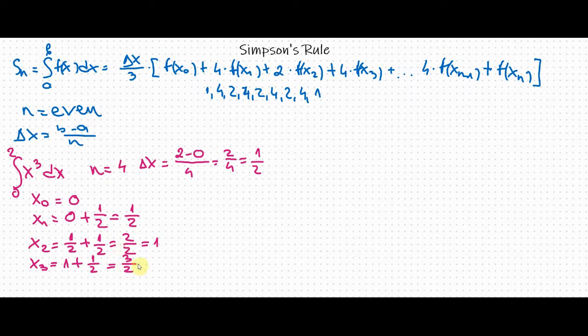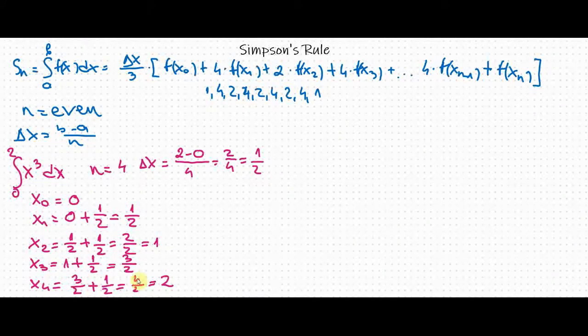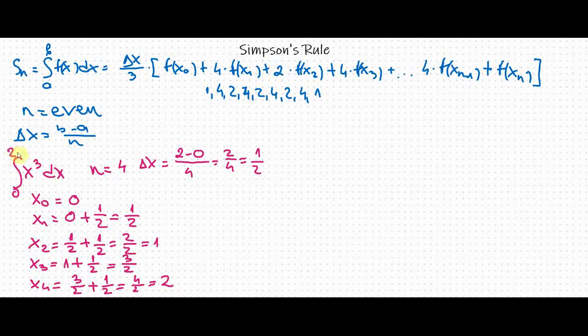For x sub 4 we have 3 over 2 plus 1 half equals 4 over 2 or simply 2. So you see we have started with a from the integral which is 0 and we have ended with x sub 4 which is 2 or b.